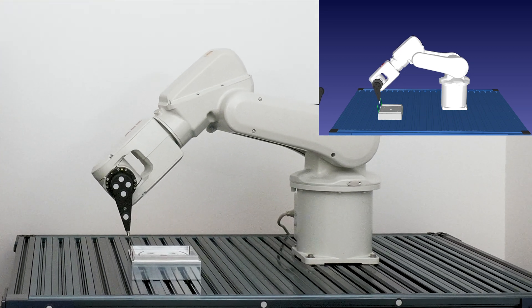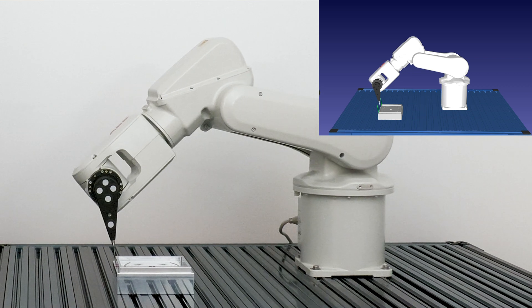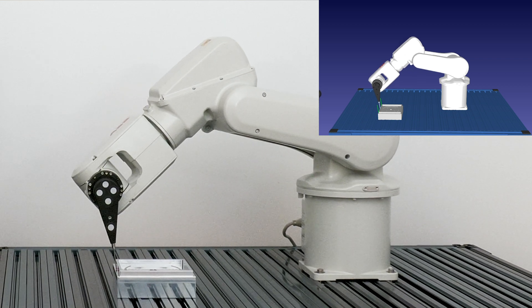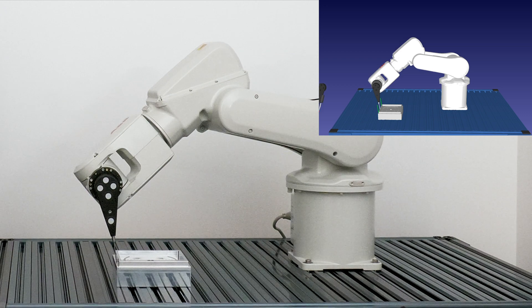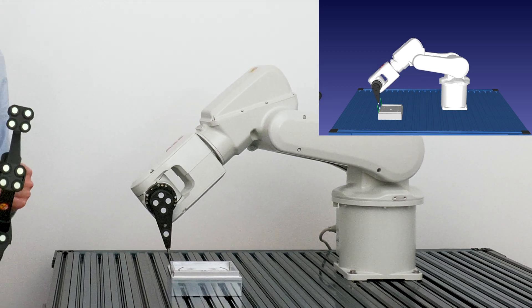In RoboDK, once we have a program, we can also modify a lot of settings such as approach, retract, distance, triggers, speed and so on.